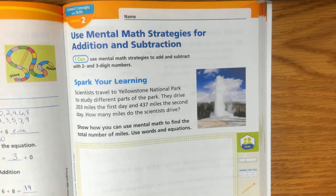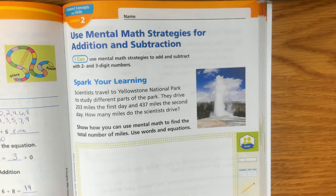Scientists travel to Yellowstone National Park to study different parts of the park. They drive 203 miles the first day and 437 miles the second day. How many miles do the scientists drive? Show how we could use mental math to find the total number of miles. Use words and equations.